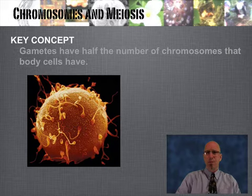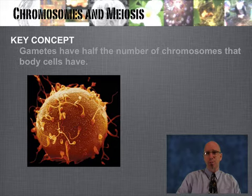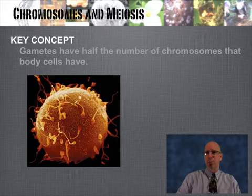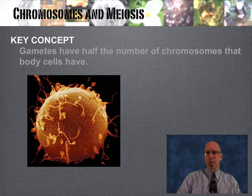Here's a human egg cell, and it's being battled for by a bunch of sperm cells. It's kind of a race — the first one to get there claims the prize of fertilization. You can see there's one sperm cell in the middle that's probably going to fertilize this haploid cell.